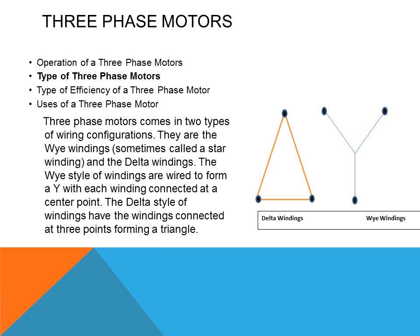Three-phase motors come in two types of wiring configurations: the Y winding, sometimes called the star winding, and the delta winding. The Y style of windings are wired to form a Y with each winding connected at the center point. The delta style of windings have the windings connected at the three points, forming a triangle.